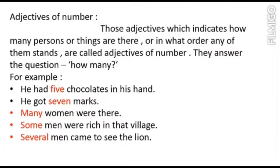Words like first, second, third, fourth — all these are also adjectives of number. They answer the question of how many. Whereas adjective of quantity answers the question of how much.